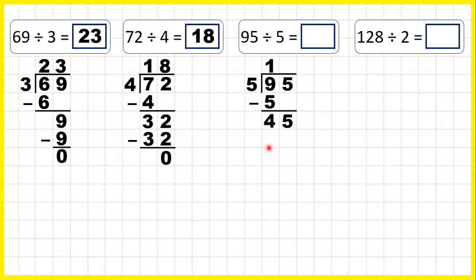Well 45 is in the 5 times table, so we can write that underneath. 9 times 5 is 45, so it's 9 as the last digit of our answer. We can subtract to 0 to show that we don't have a remainder, and we have our answer up here. 95 divided by 5 is 19.